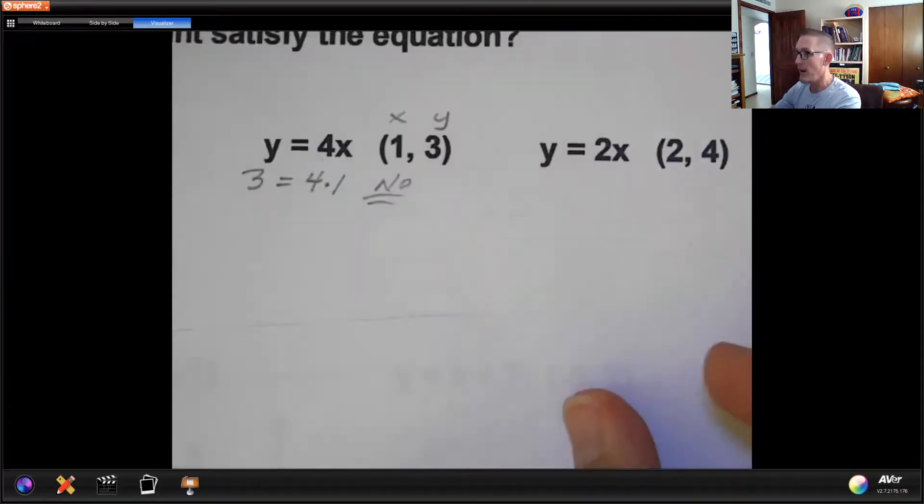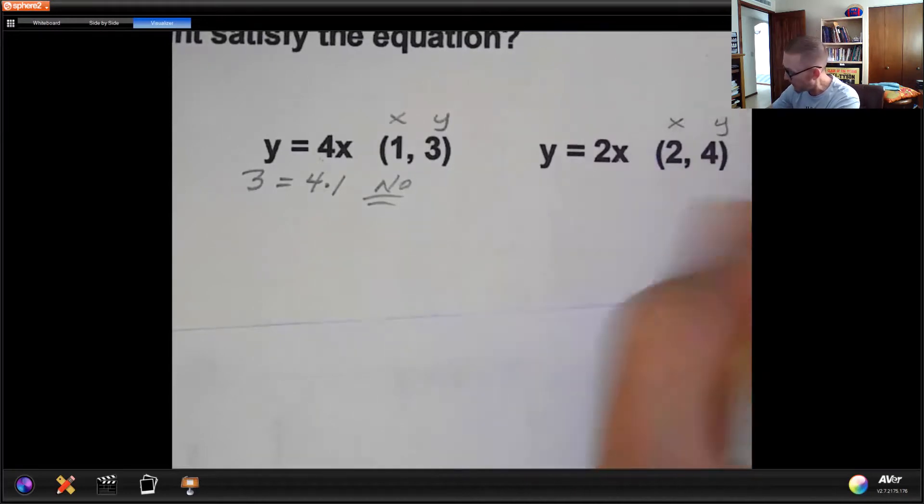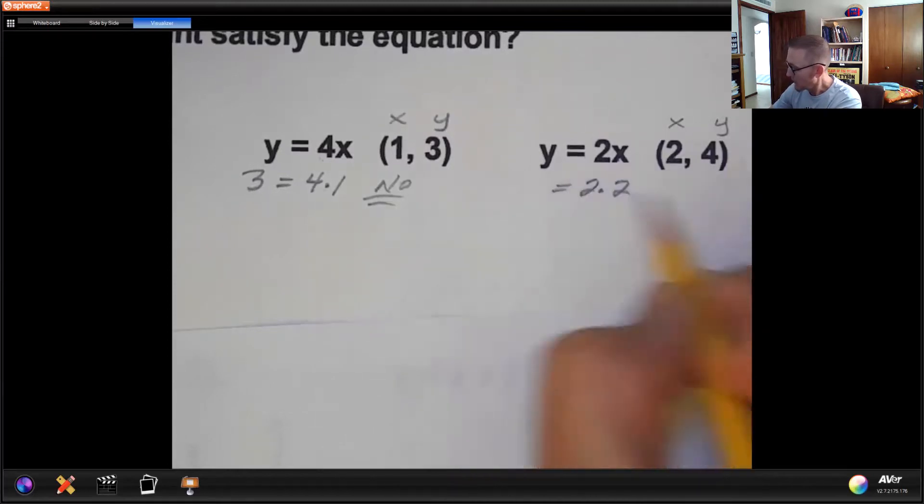So over here, I have y equals 2x. And here's my x and here is my y. So I'm going to take this 2. I'm going to plug it in for x. And 2 is touching x, which means multiply. So this becomes 2 times x or 2 times 2. The y is going to get replaced with 4.